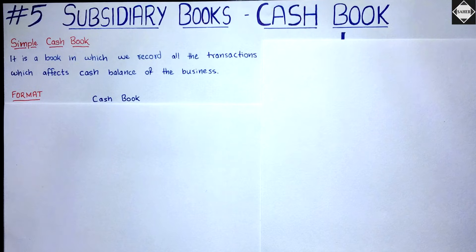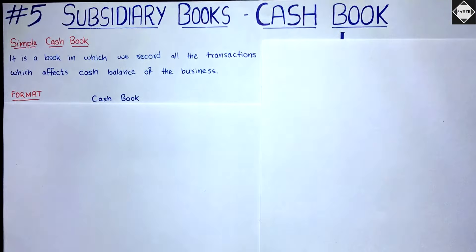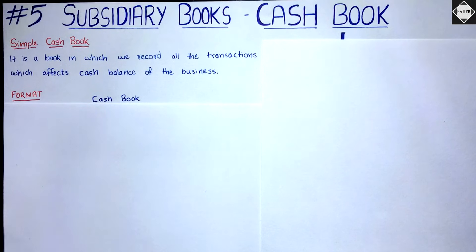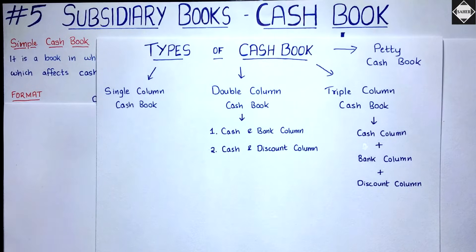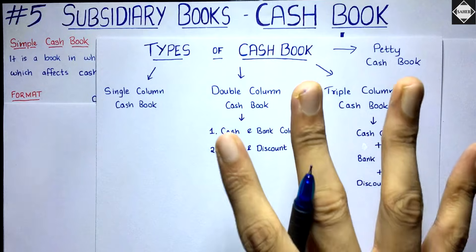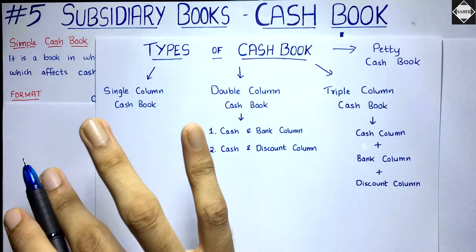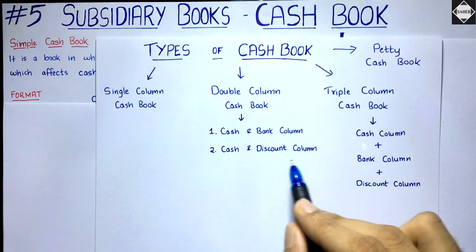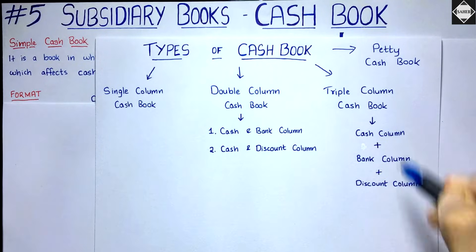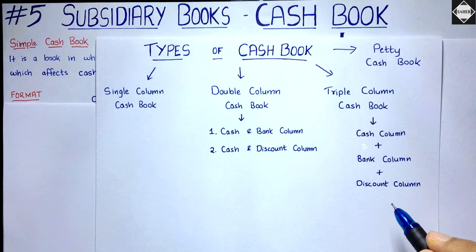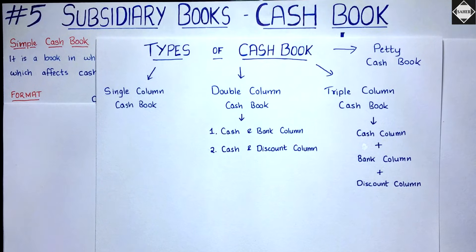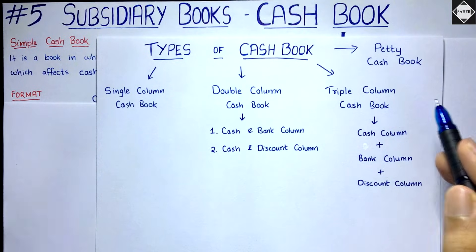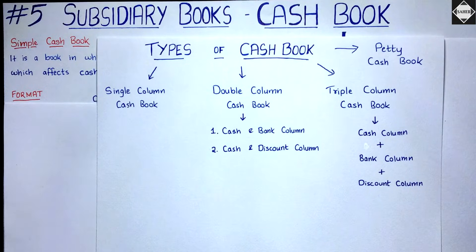Hi everyone, welcome back. Today in this video we are going to discuss cashbook and see how to prepare a simple single column cashbook. Before that we have to discuss the concept. There are four different types of cashbook: single column cashbook, double column cashbook (cash and bank column, and cash and discount column), triple column cashbook (cash, bank, and discount columns), and petty cashbook. We will have separate videos for each type.